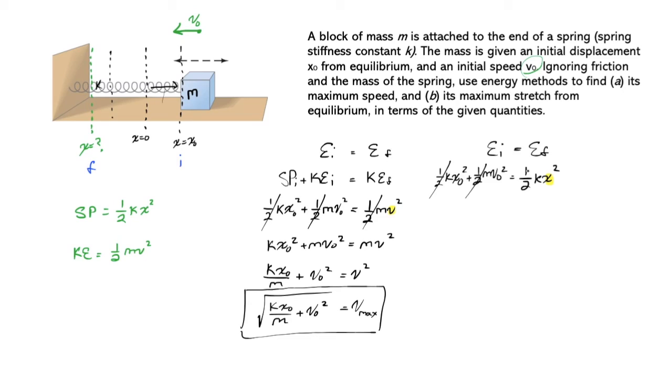The algebra is almost exactly the same. Cancel out all the 1/2s and divide by k. This time, you get x naught squared, because you cancel out the k on that term, plus m v naught squared over k is equal to x squared.